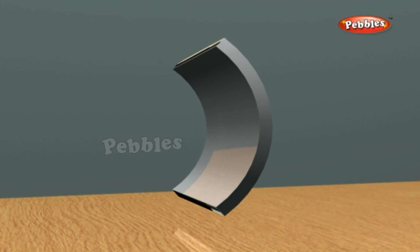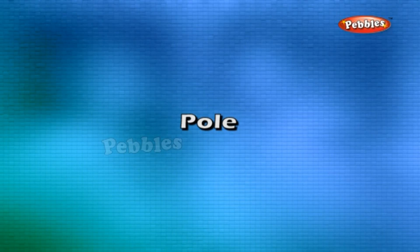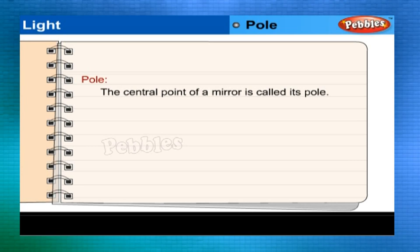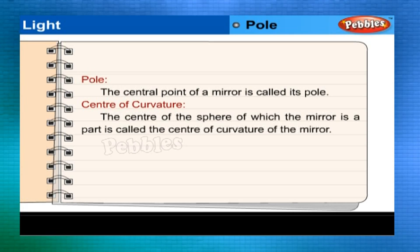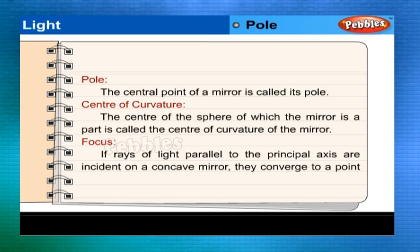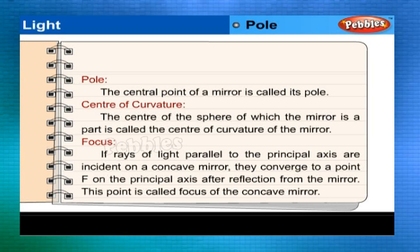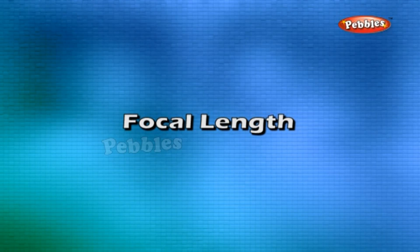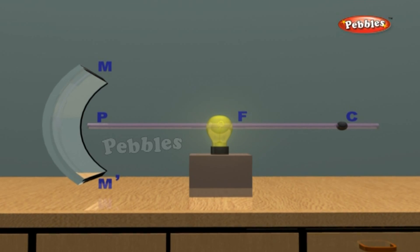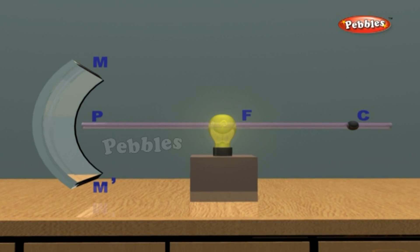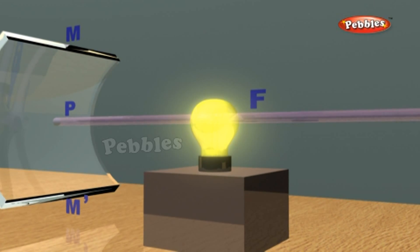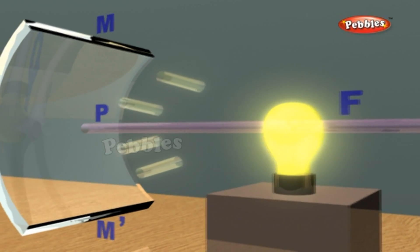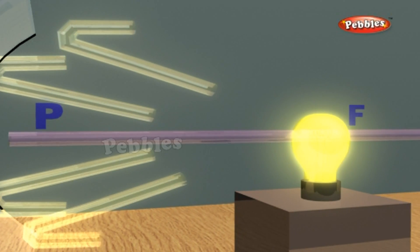A spherical mirror is usually represented by drawing its section. The central point of a mirror is called its pole. The center of the sphere of which the mirror is a part is called the center of curvature. If rays of light parallel to the principal axis are incident on a concave mirror, they converge to a point F on the principal axis after reflection — this point is called the focus of the concave mirror. The distance between the focus F and the pole P is called the focal length. If a point source is placed at the focus, rays after reflection become parallel to the principal axis.